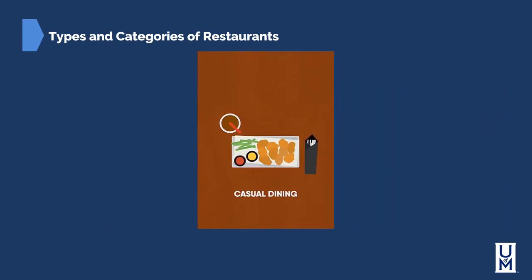Casual dining is one of the largest segments of restaurants and consists of restaurants such as Chili's and Applebee's and various sit-down restaurants. Typically what separates this type of restaurant from others is the dress code and the sit-down, dining room capability. You will typically find servers in this type of restaurant, as opposed to just grab-and-go from the countertop.